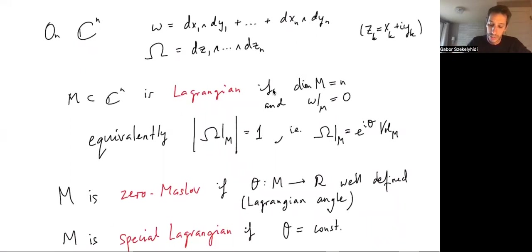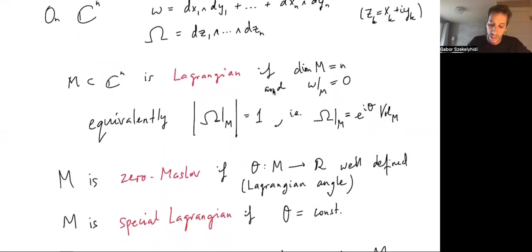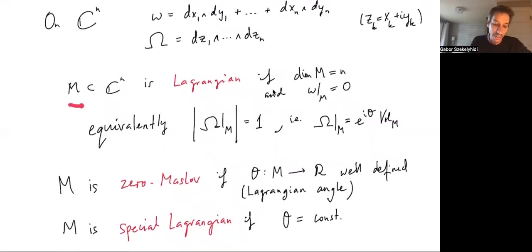Now quickly, let's run over some definitions. A sub-manifold inside C^n is Lagrangian if it has real n-dimensional, so it has exactly half the dimension, and the symplectic form vanishes when restricted to M.